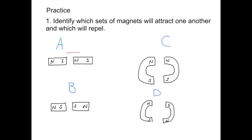So in the case of A, we have south and north next to each other. This means that the magnets will attract.